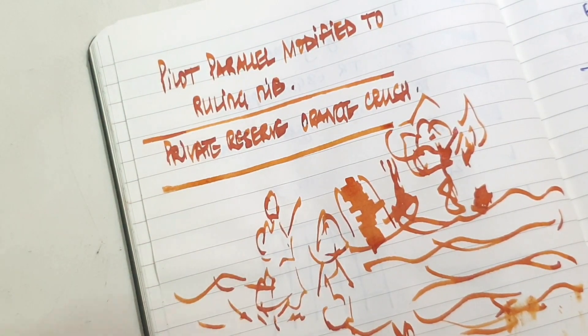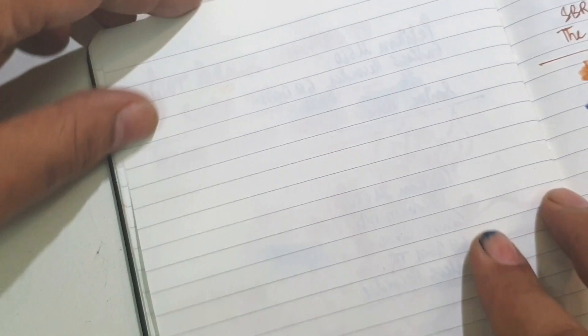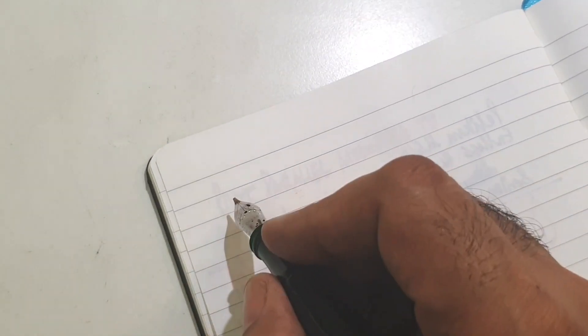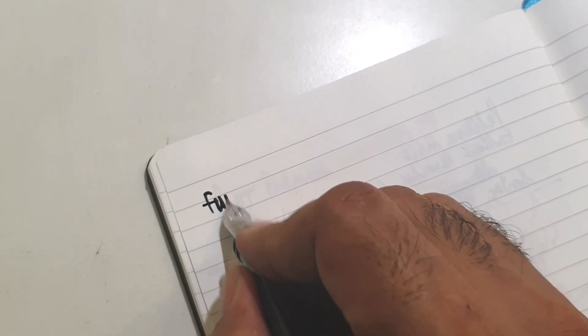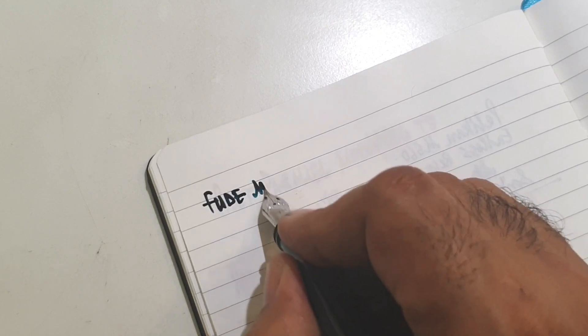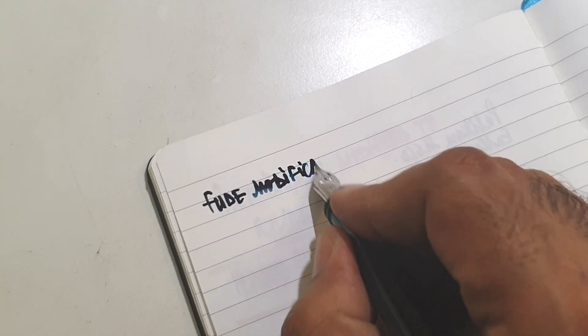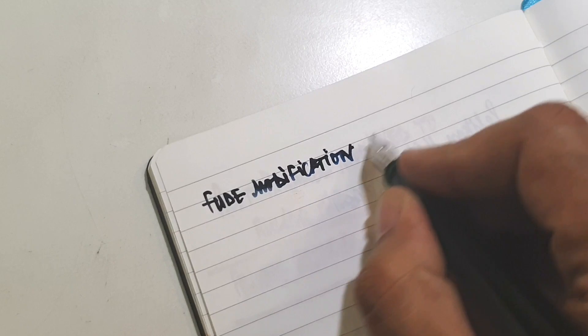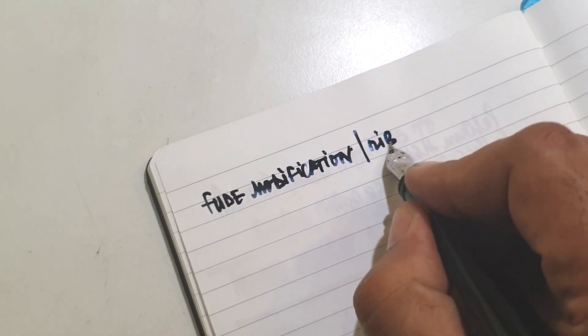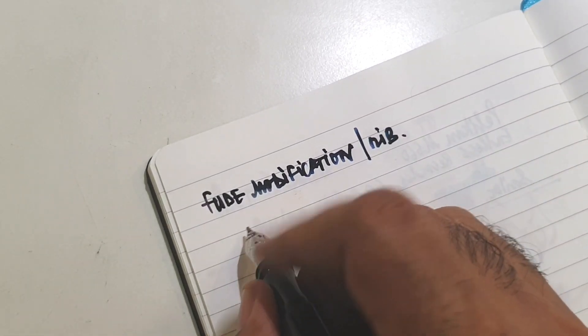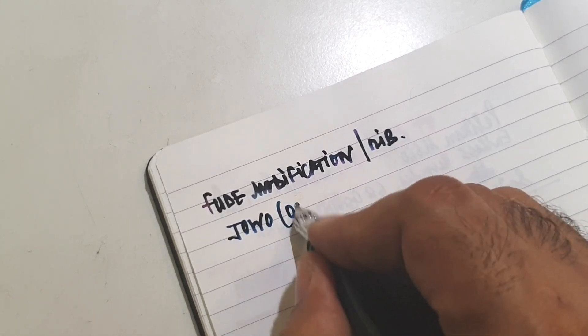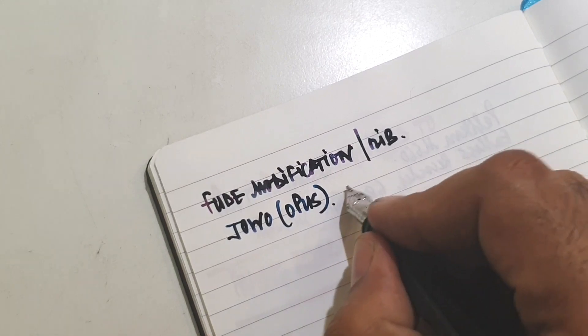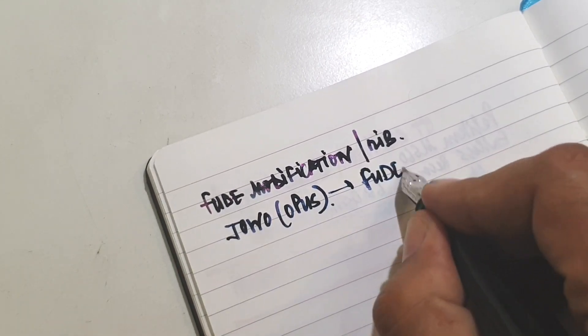The other grind which I am going to take up now is again something which I think will interest the people who are more into sketching with a fountain pen and this is a feud modification or a feud nib basically and this one is a yo-wo, it's an opus nib which has been ground into a feud grind.